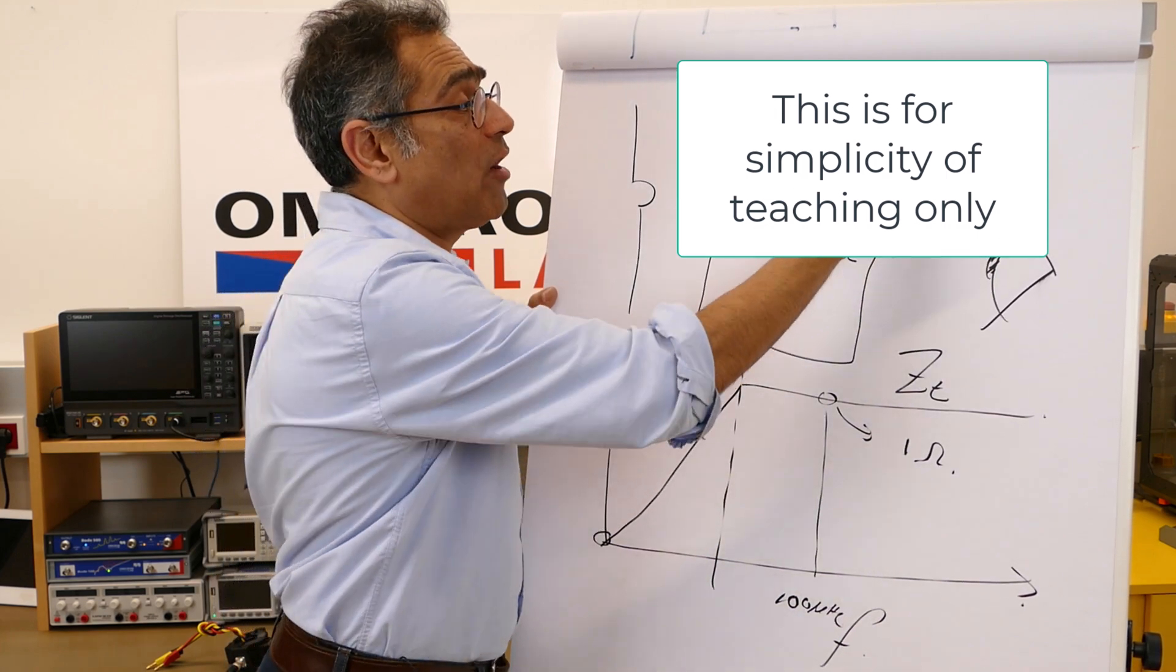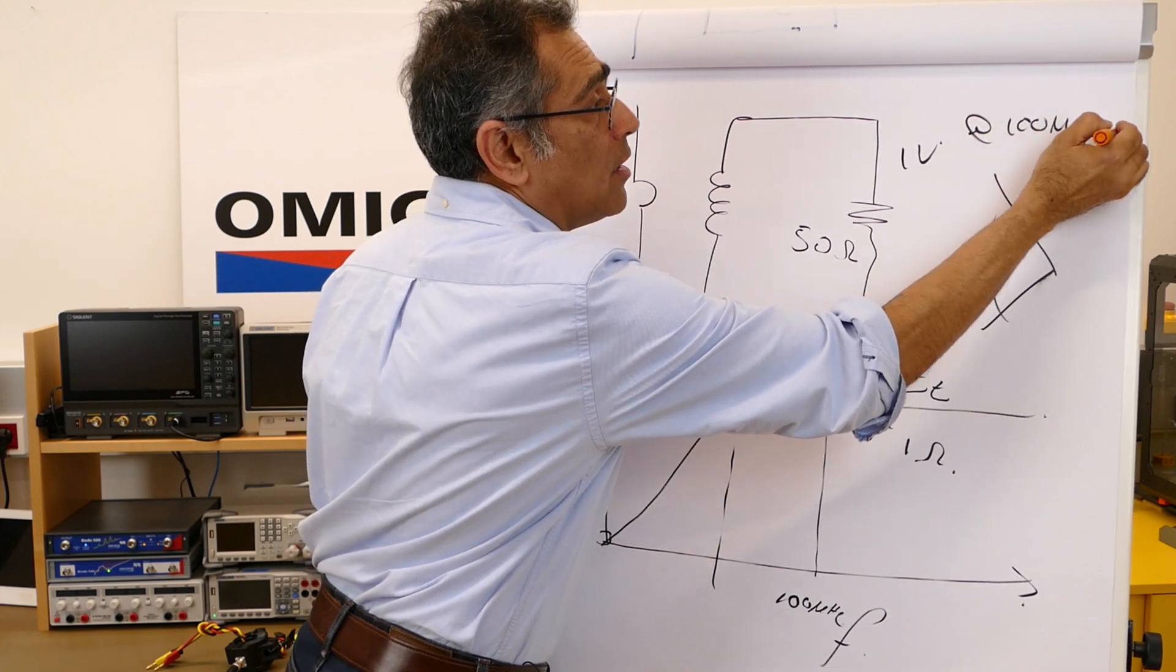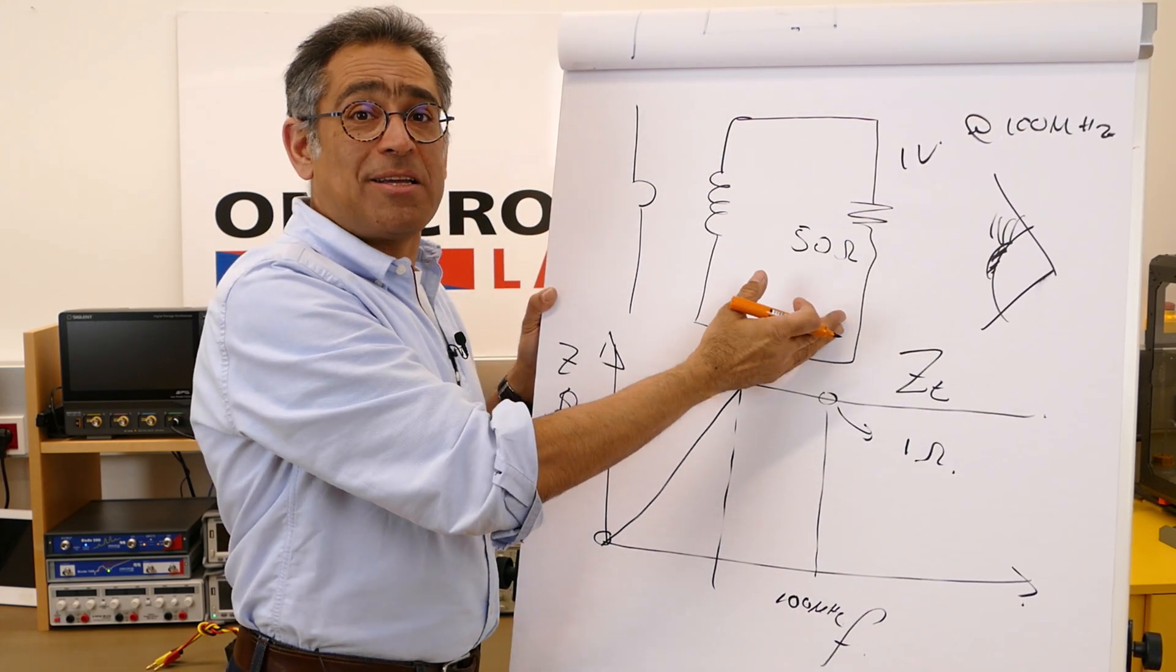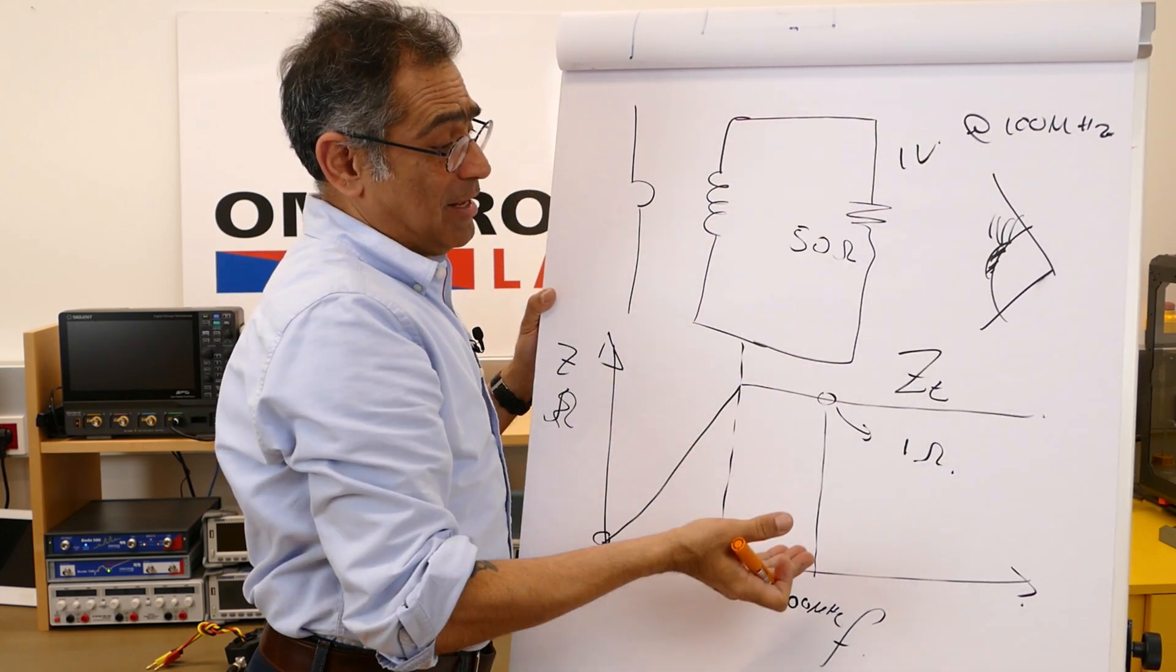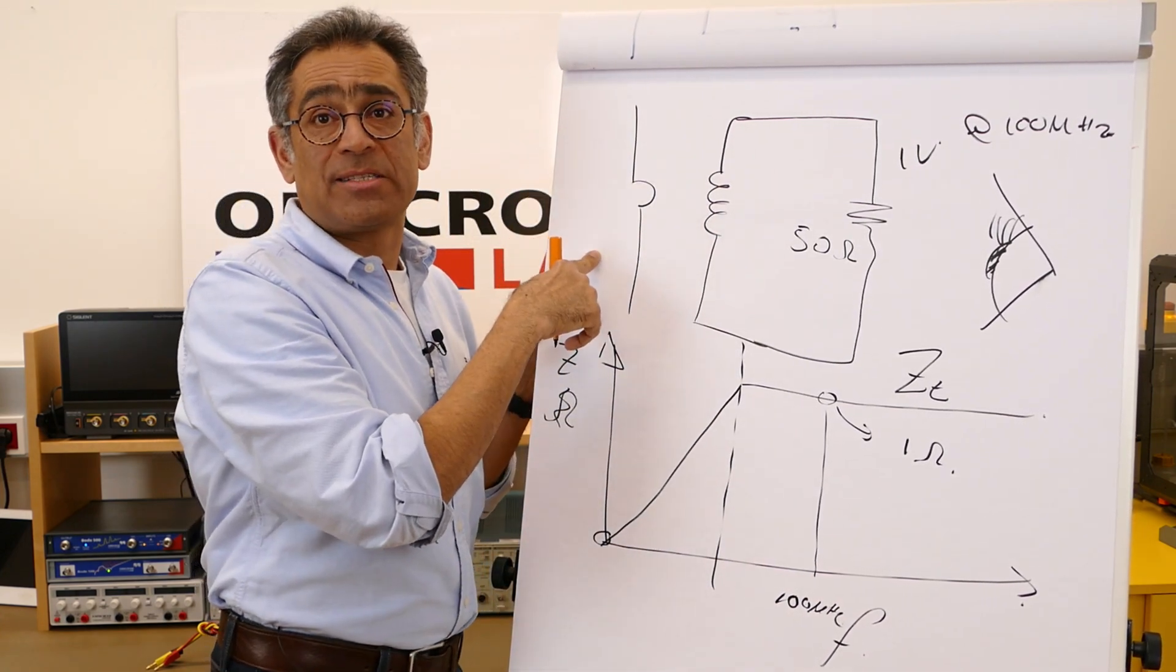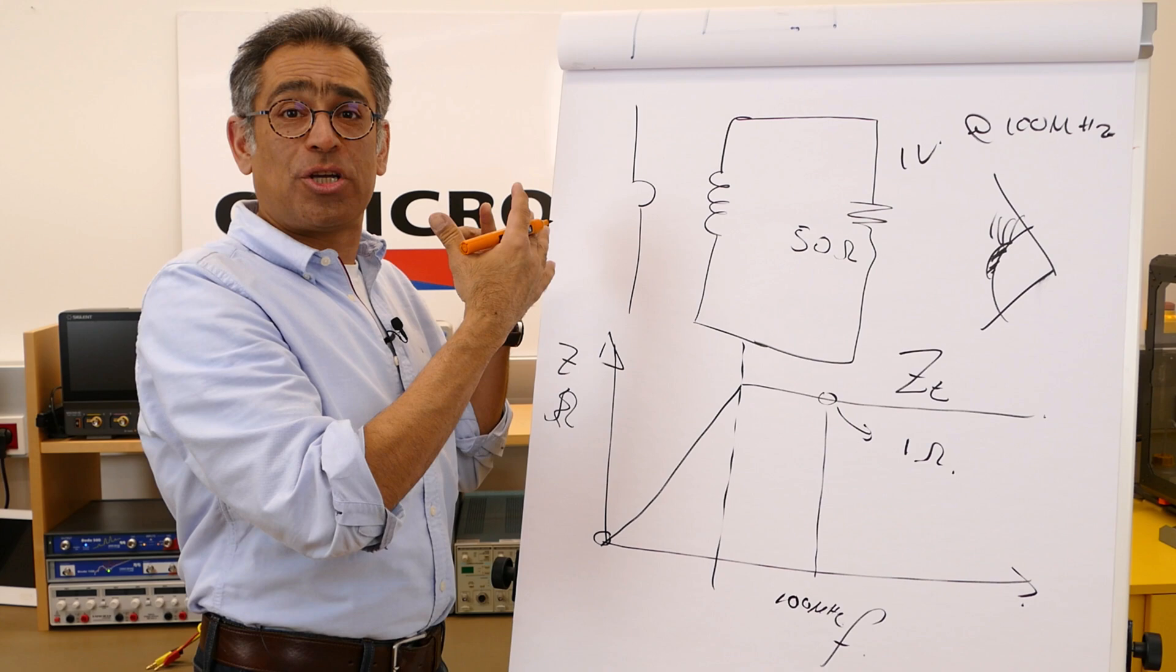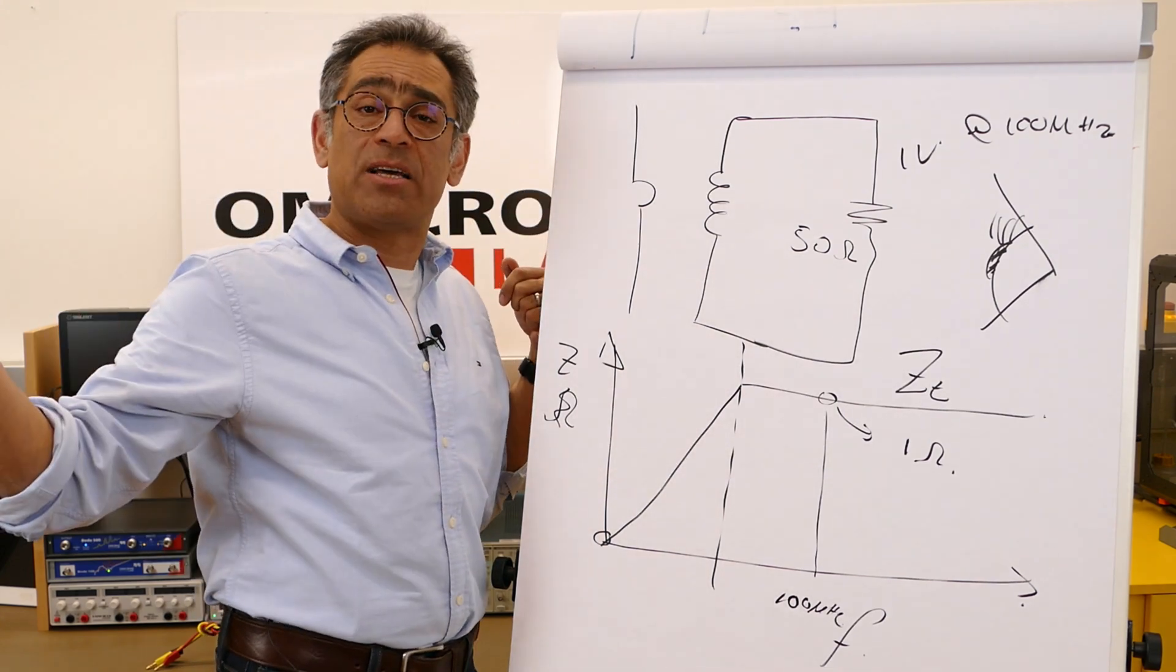And let's again for simplicity say that we are measuring 1 volt at 100 megahertz from the spectrum analyzer. It follows therefore that 1 volt divided by 1 ohm at 100 megahertz, you have got 1 amp flowing down this cable.